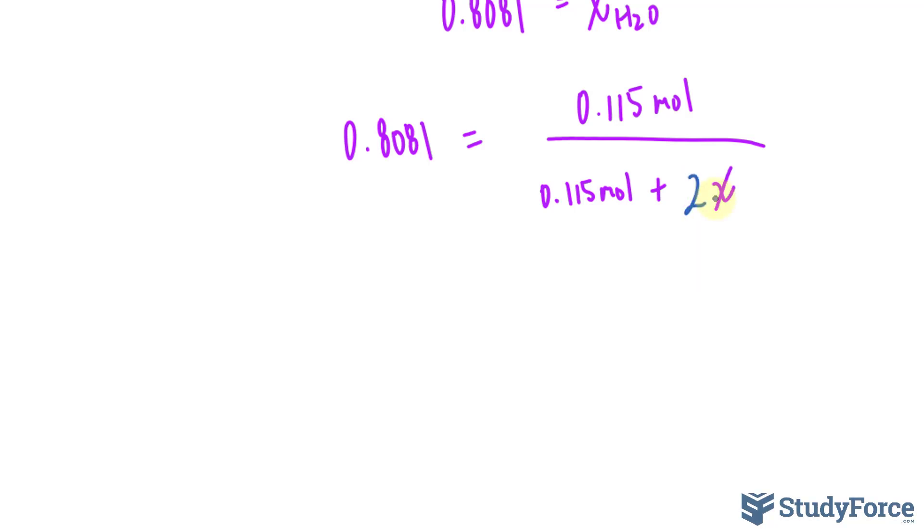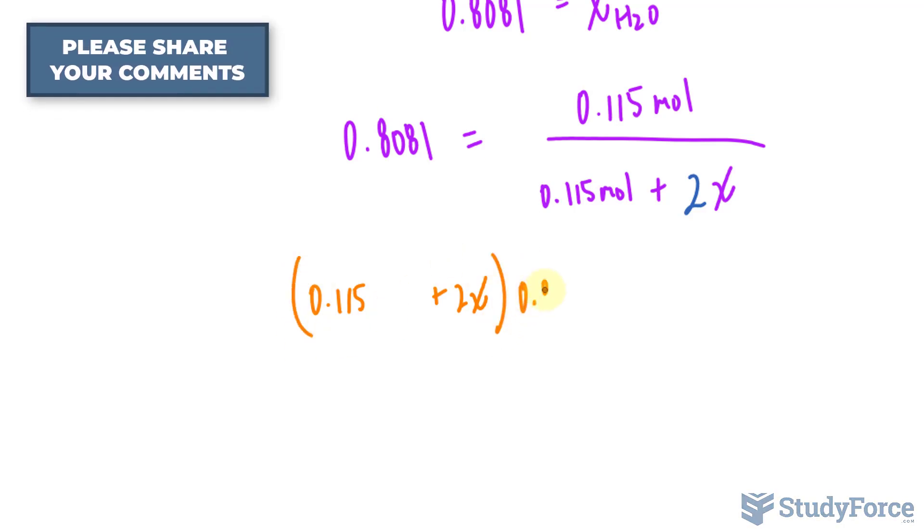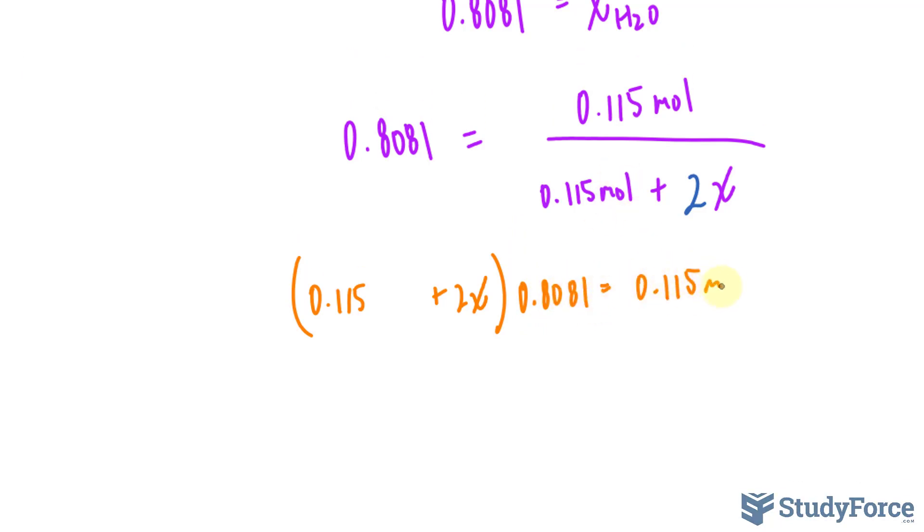So we have two times x, I need to solve for this x and that will give me the answer. Multiply both sides by the denominator and this gives us 0.115 moles plus 2x, and just for clarity's sake I'm not going to write the units, that's being multiplied to 0.8081 is equal to 0.115 moles. The next thing I'll do is divide both sides by this factor and that will get rid of that, 0.8081.